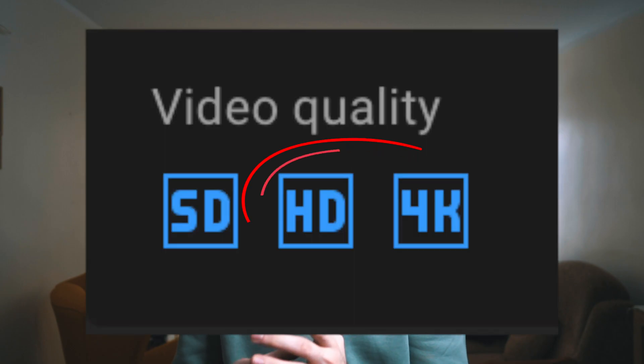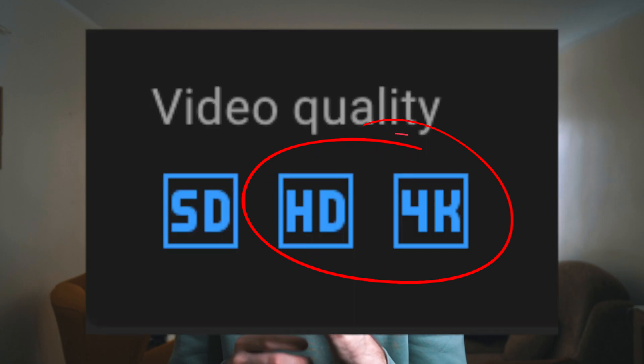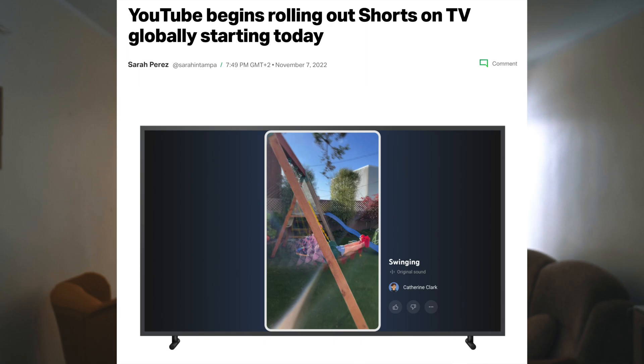The main reason you want to upload your YouTube Shorts through desktop is that you can upload in HD and 4K versions — you cannot do that with your smartphone. I always choose the 4K video aspect ratio.